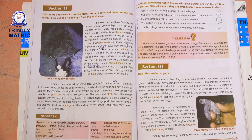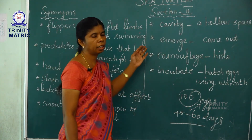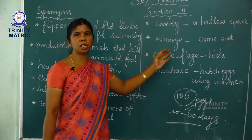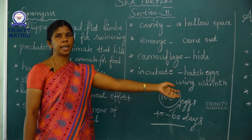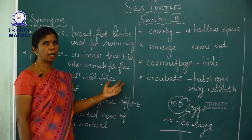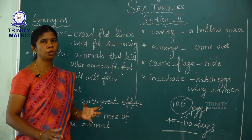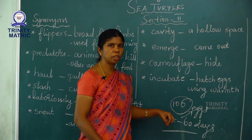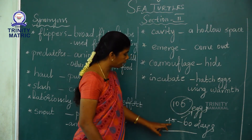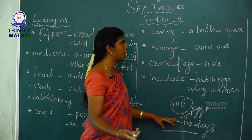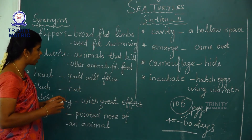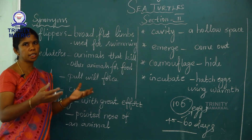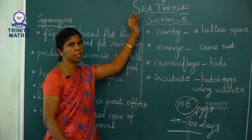Incubate means to hatch eggs using warmth. Once again, here is the summary of section two: from January to March, sea turtles come to lay eggs on the sandy beach. It needs great effort to come ashore and lay the eggs. They dig nearly 45 centimeters deep and lay about 100 eggs. It takes 45 to 60 days to hatch. When the hatchlings come out, they need great effort to move on the sand, then they reach the sea water. This is the life cycle of the sea turtle.